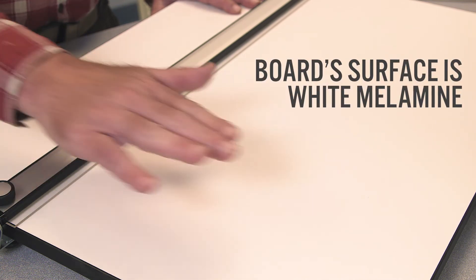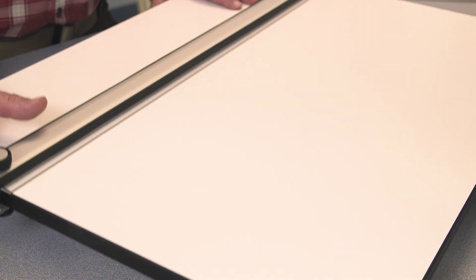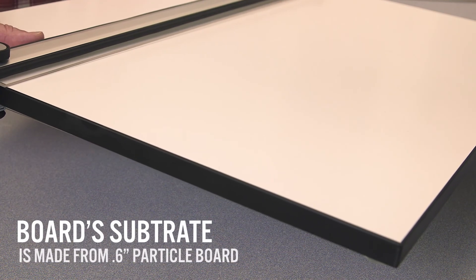The board surface is white melamine for bump-free drawing. The board substrate is made from 0.6 inch thick particle board for strength and durability.